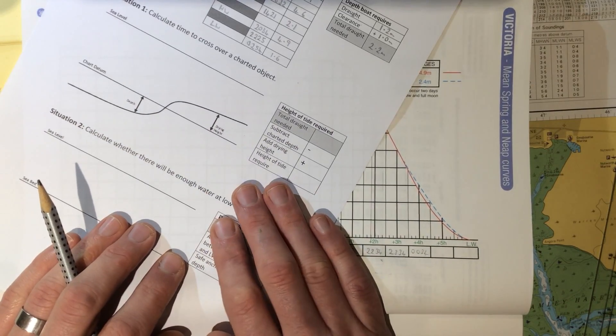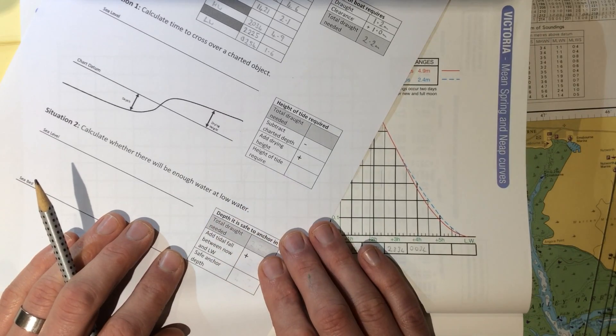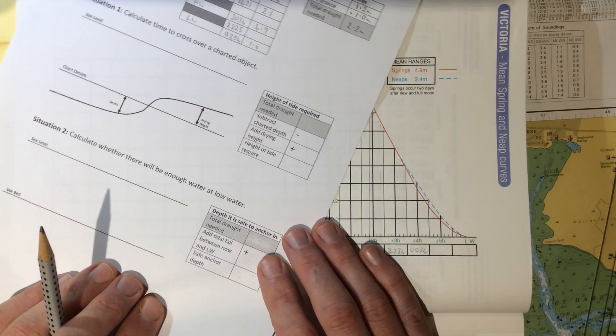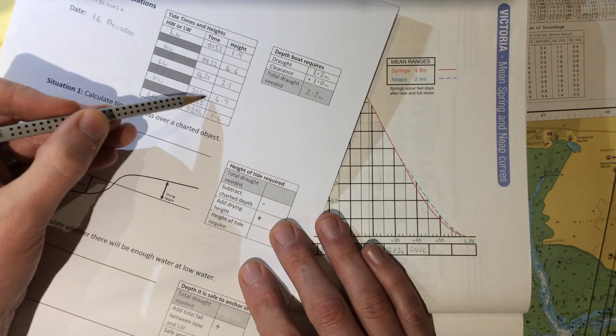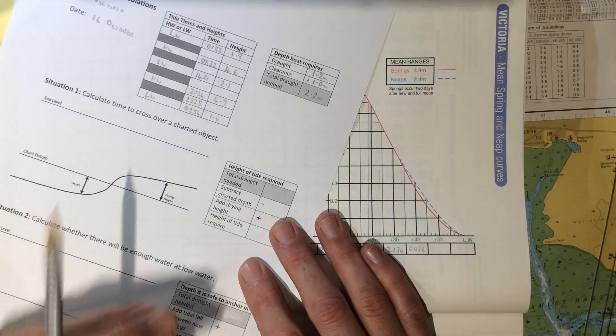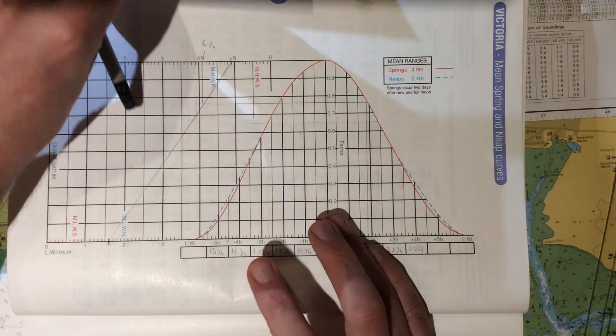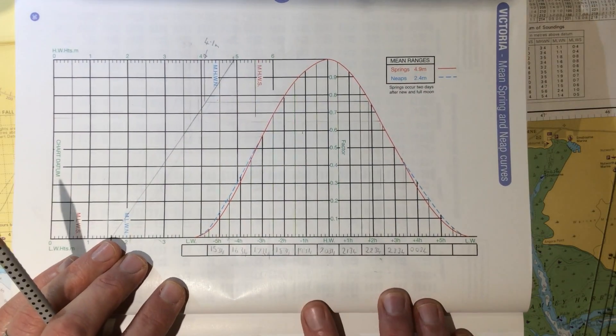But of course the tide is going to fall between now and low water, so we have to calculate how much the tide is going to fall by. We know it's going to be somewhere between these two figures, but we need to know what. So we go back to our curve.